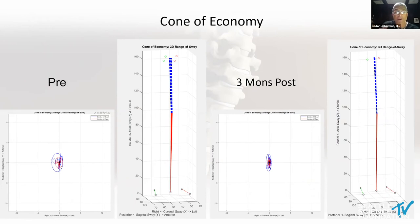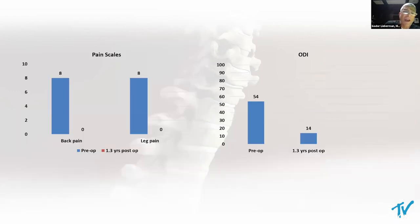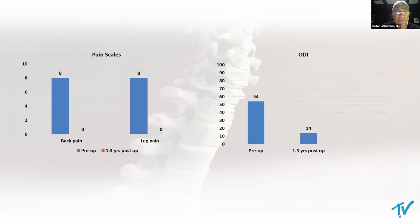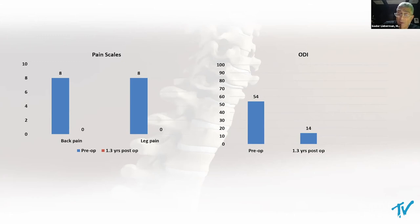This justifies our existence and tells us we are doing better for these patients. Matching with his patient-reported outcomes at 1.3 years: pre-op back pain VAS 8, leg pain 8 — post-op, 0 and 0. His ODI improved substantially from 54 to 14. This helps me justify that I'm doing the right thing for these patients.